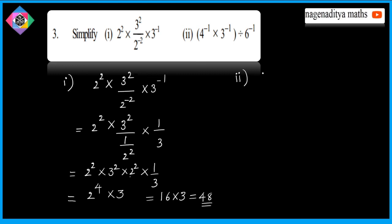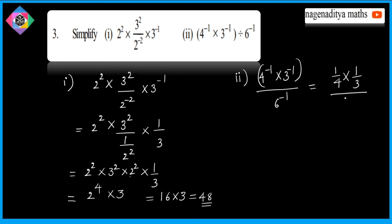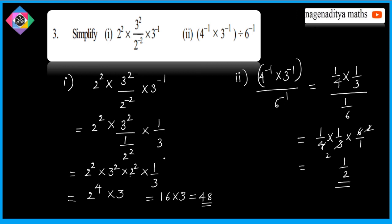Second problem: 4^(-1) × 3^(-1) divided by 6^(-1). Converting: 4^(-1) = 1/4, 3^(-1) = 1/3, 6^(-1) = 1/6. So this equals (1/4) × (1/3) × 6 = 6/12, which simplifies to 1/2. Thank you very much.